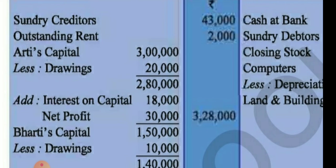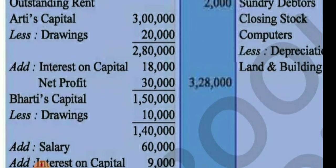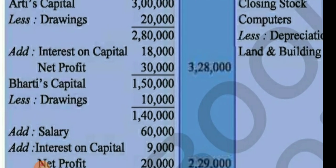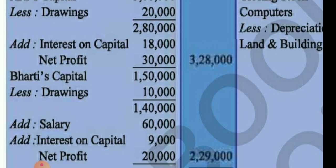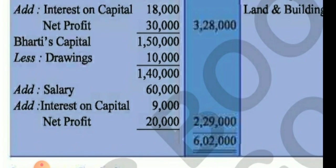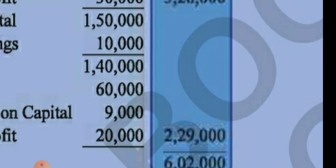Add interest on capital ₹18,000 and then add net profit from the P&L Appropriation account to get Aarti's final capital. For Bharti's capital: ₹1,50,000 less drawing ₹10,000, then add salary, add interest on capital, and add net profit. Bharti's final capital comes to ₹2,29,000.